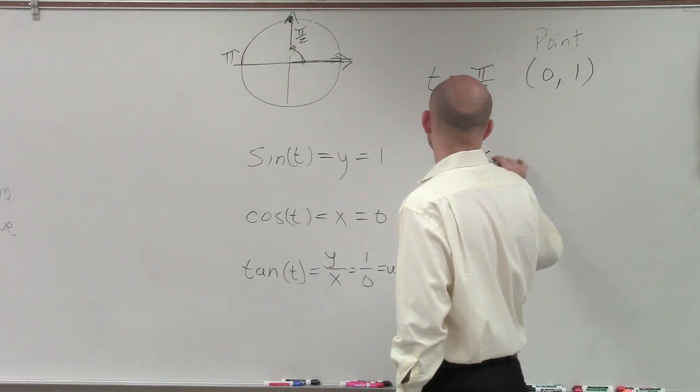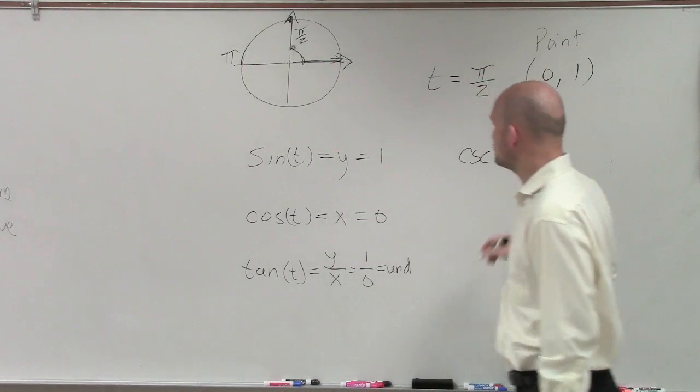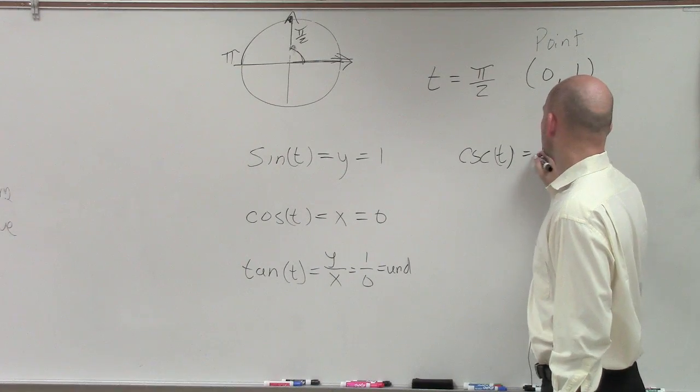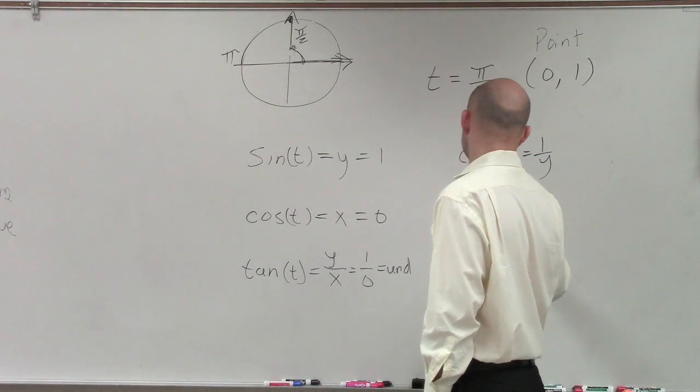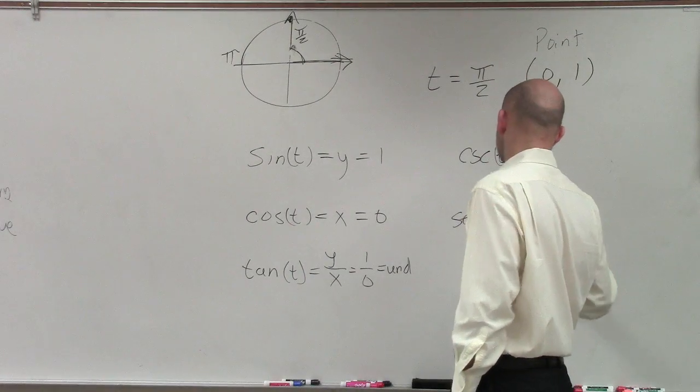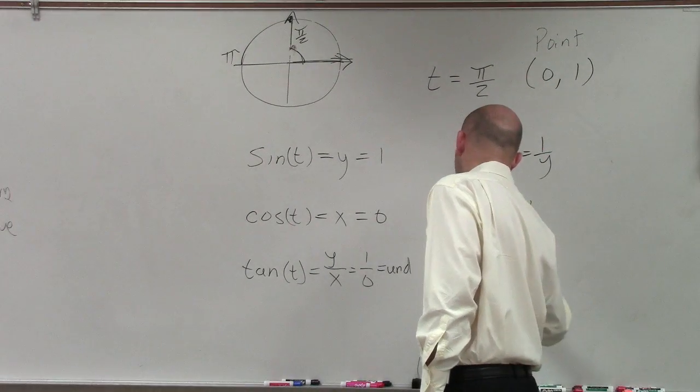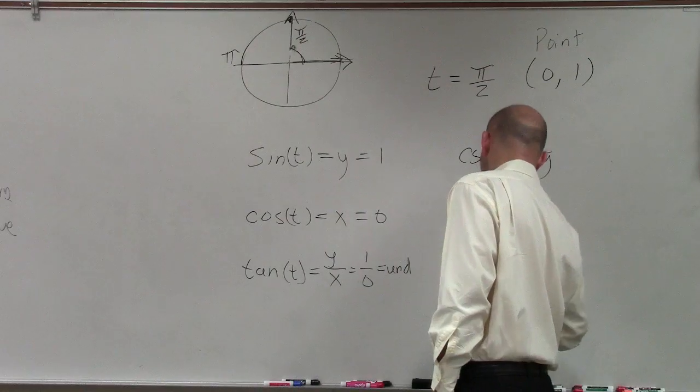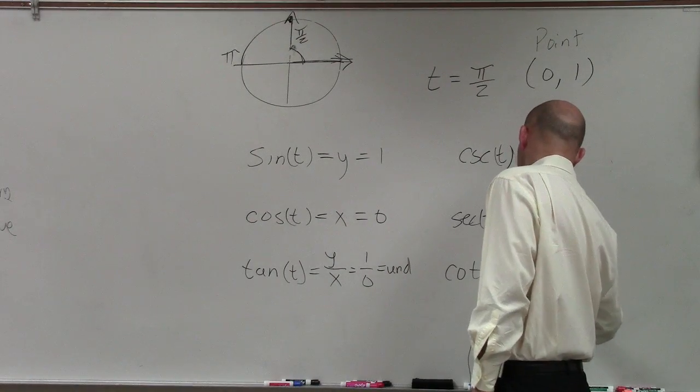Then we use the reciprocal functions. The cosecant of t is equal to 1 over y. The secant of t is equal to 1 over x. And the cot, or cotangent of t, better known, is equal to x over y.